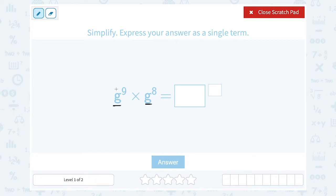If we're multiplying g out 9 times and then another 8 times, that means we're multiplying it out 9 plus 8 times. So we can simplify that and say 9 plus 8 is 17. So we would call this g to the 17th power.